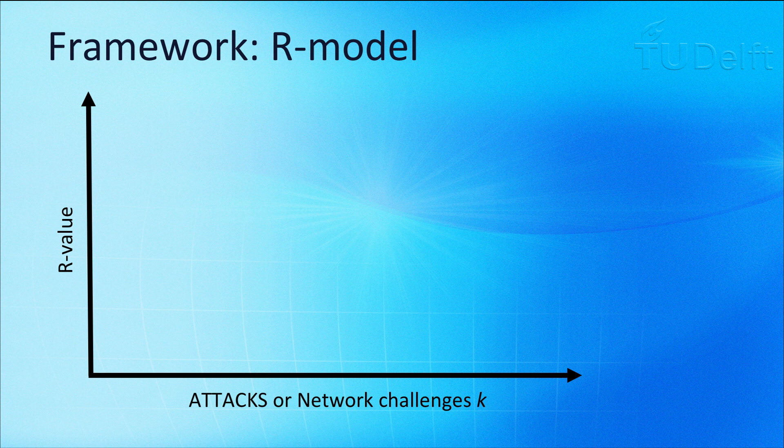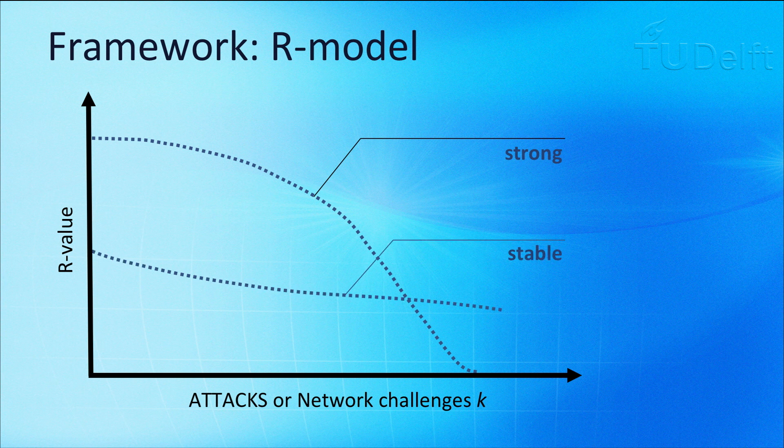Here we can see three behaviors for three different networks. A strong, always on top, a stable but low, and a weak, a rapid decay in the r-value.